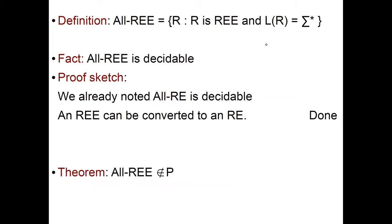Let me define all-RE↑ to be the language of RE↑ whose language is sigma star. First, note that all-RE↑ is decidable. We saw already that all-RE is decidable, and if you have an RE with exponentiation, you can convert it to a plain RE — just open up every exponentiation and write it as a plain RE, then run the program for all-RE. So all-RE↑ is decidable.